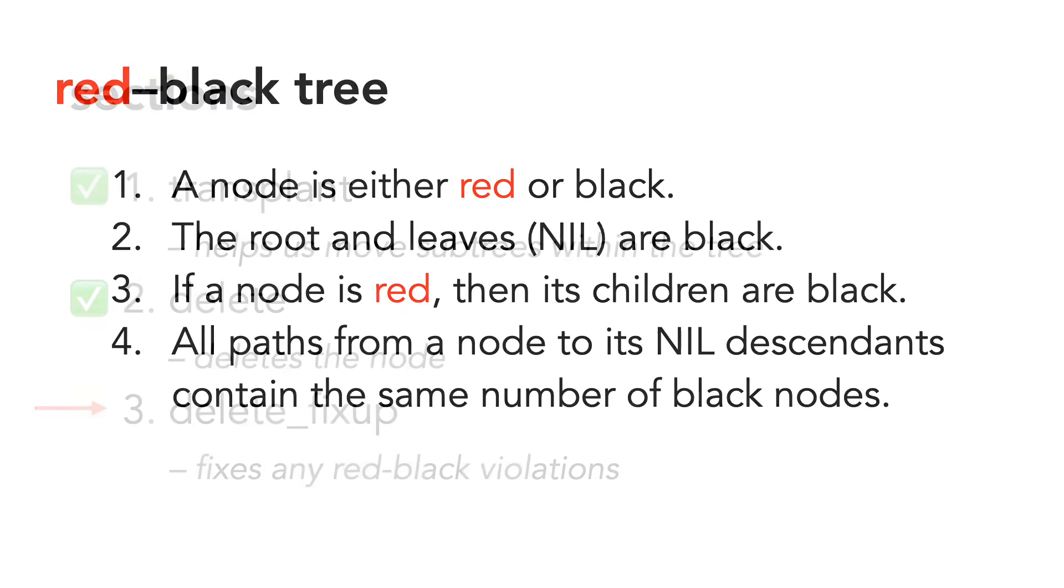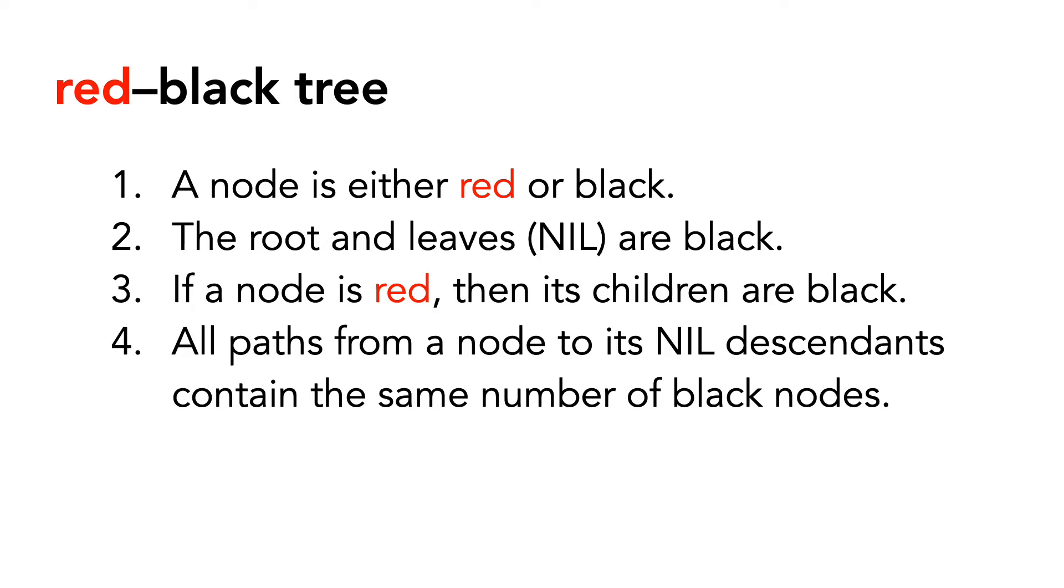As a reminder, here are the properties of red-black trees. A node is either red or black. The root and leaves are black. If a node is red then its children are black, and all paths from a node to its nil descendants contain the same number of black nodes. When we delete a node from a red-black tree, we may need to rebalance or recolor nodes to make sure these properties are still met.